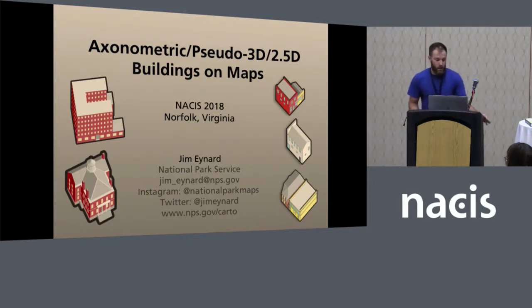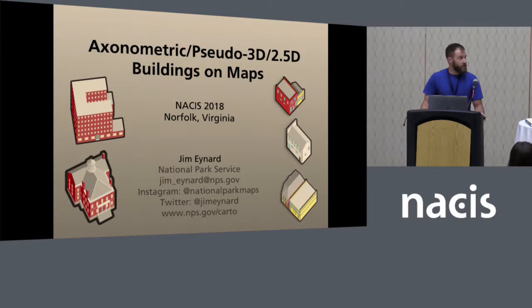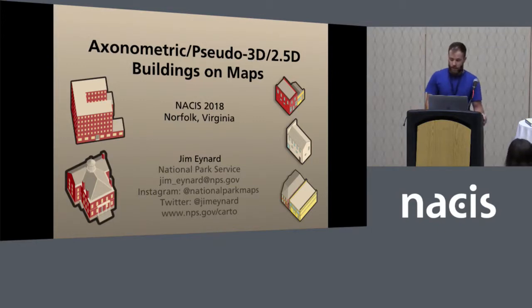These buildings work well on larger-scale maps where you're trying to point out specific buildings, like a walking tour map of an urban area where you have certain museums or such that you need to show. Last year I gave a talk on hyperrealistic 3D oblique maps made with complex 3D software such as View Infinite or Cinema 4D. This talk is sort of the opposite of that — these are very simple buildings, easy to make. Let's dive right in and look at some examples.